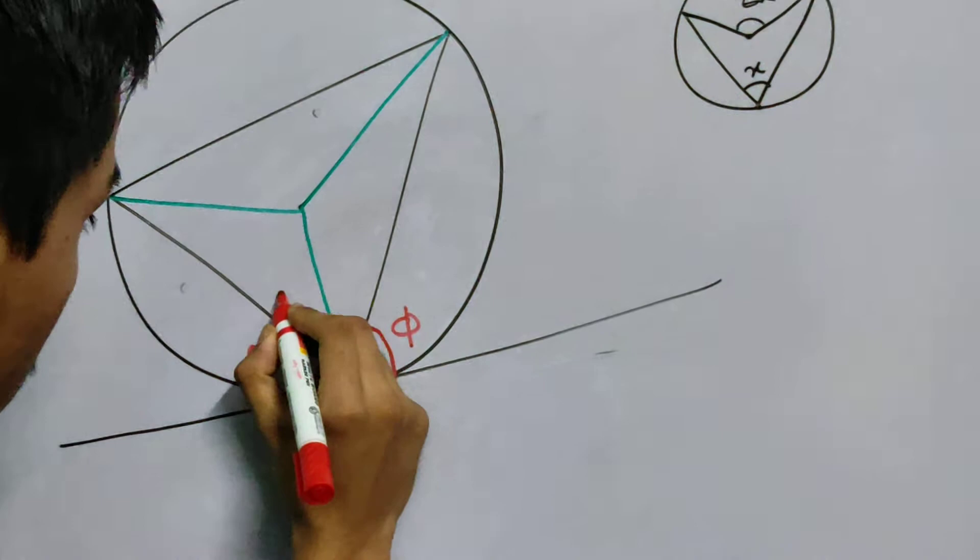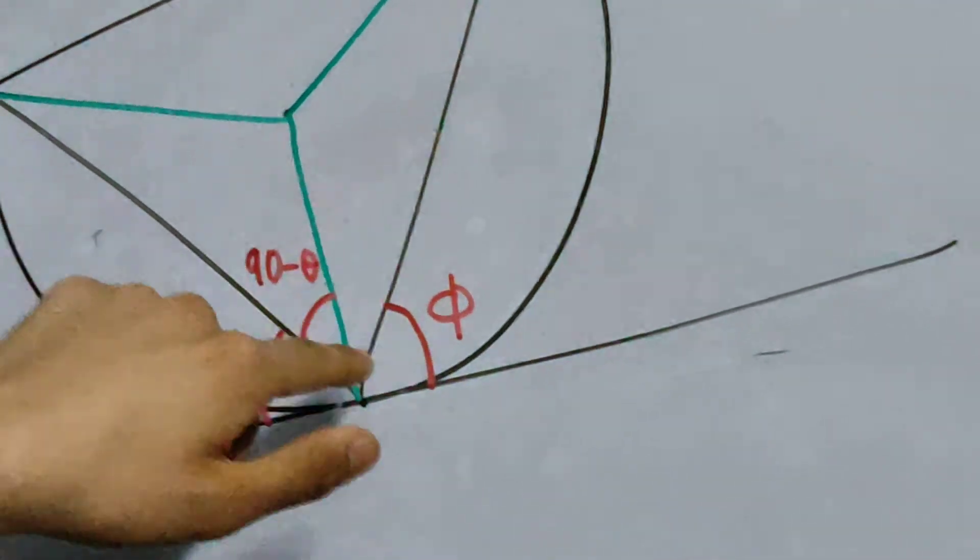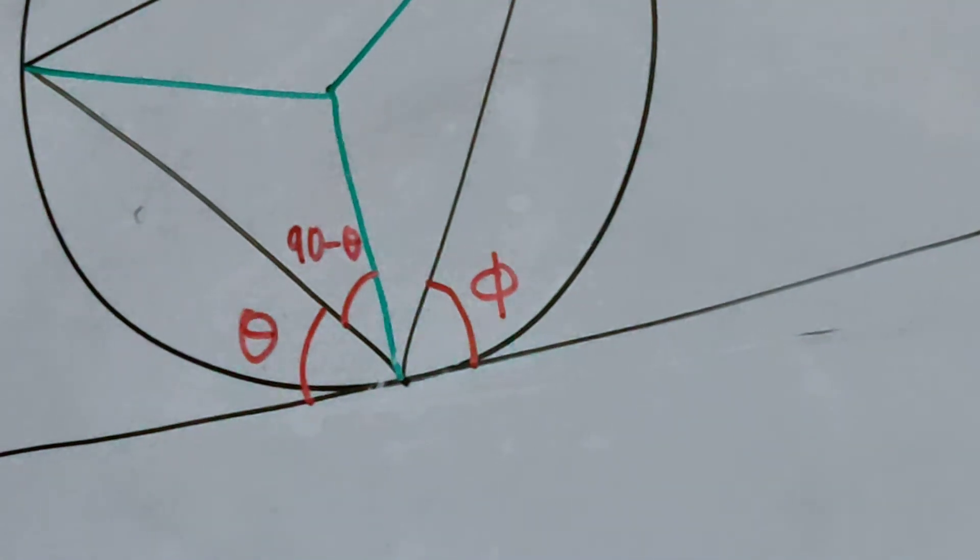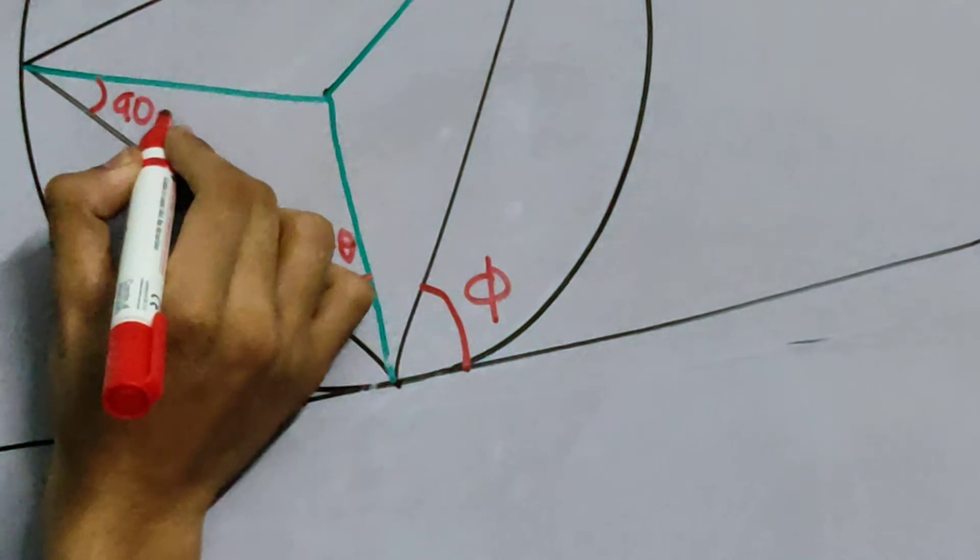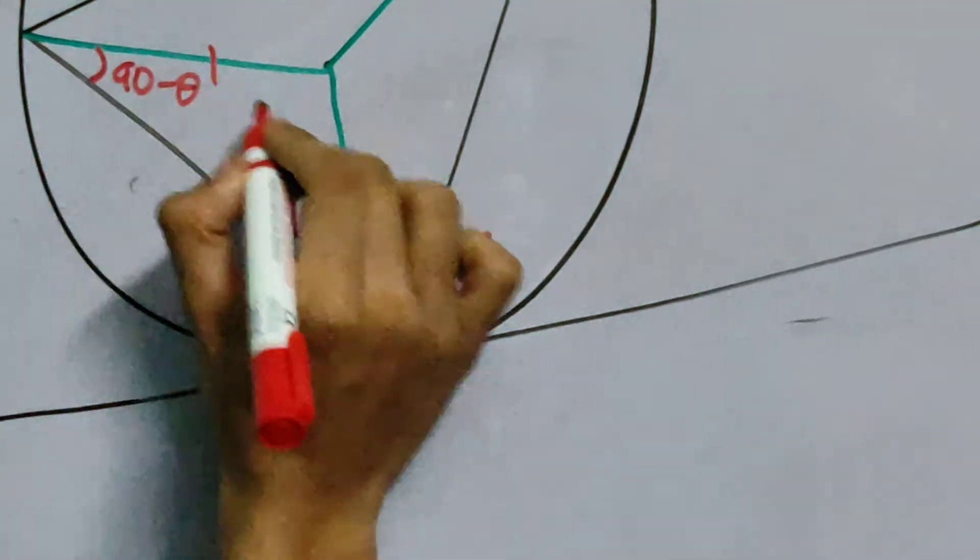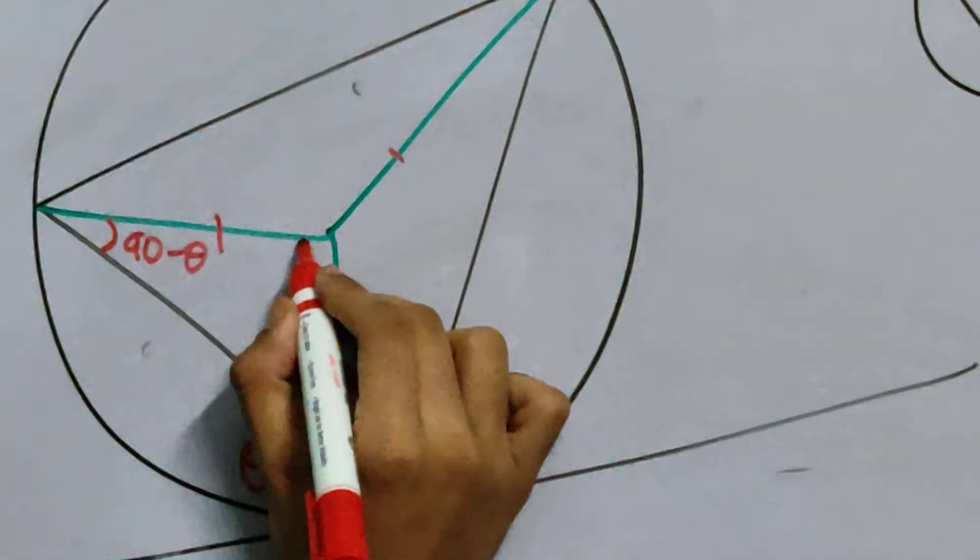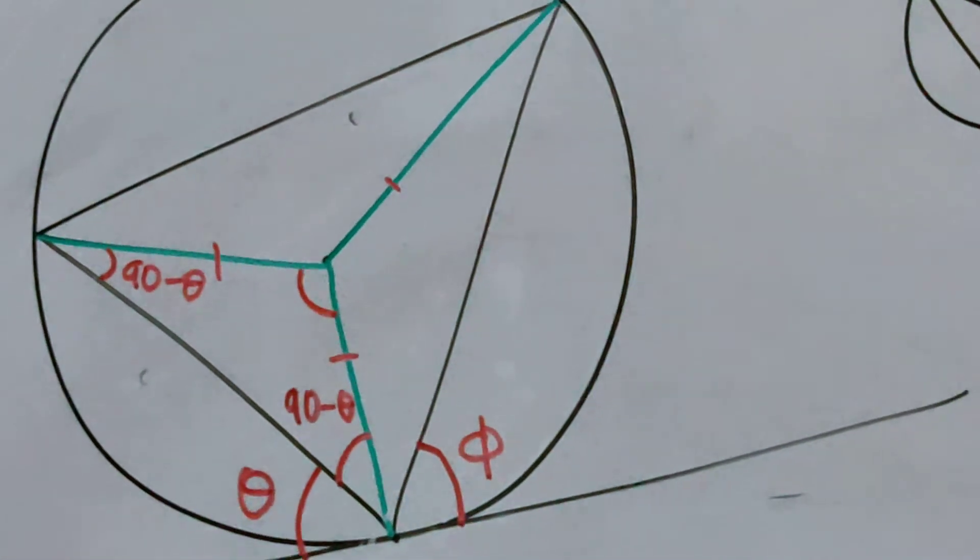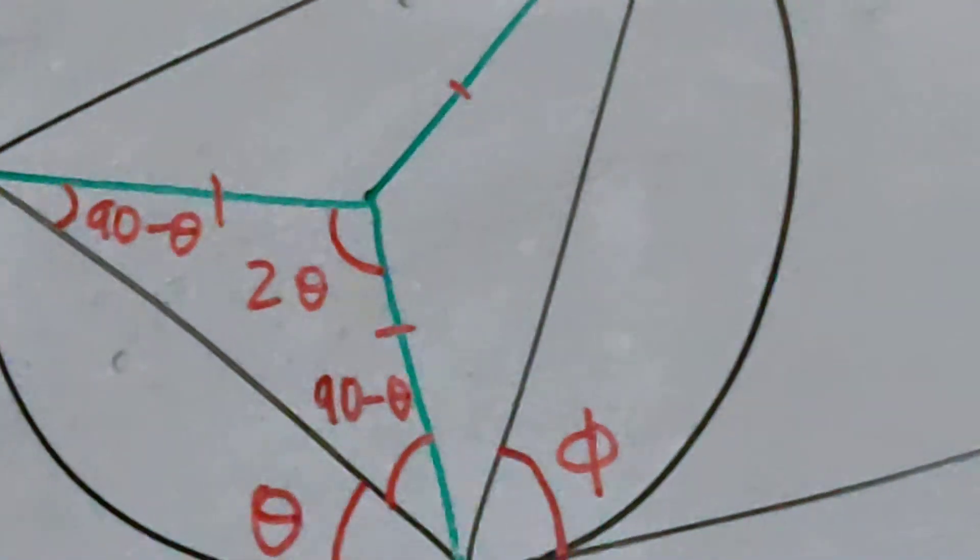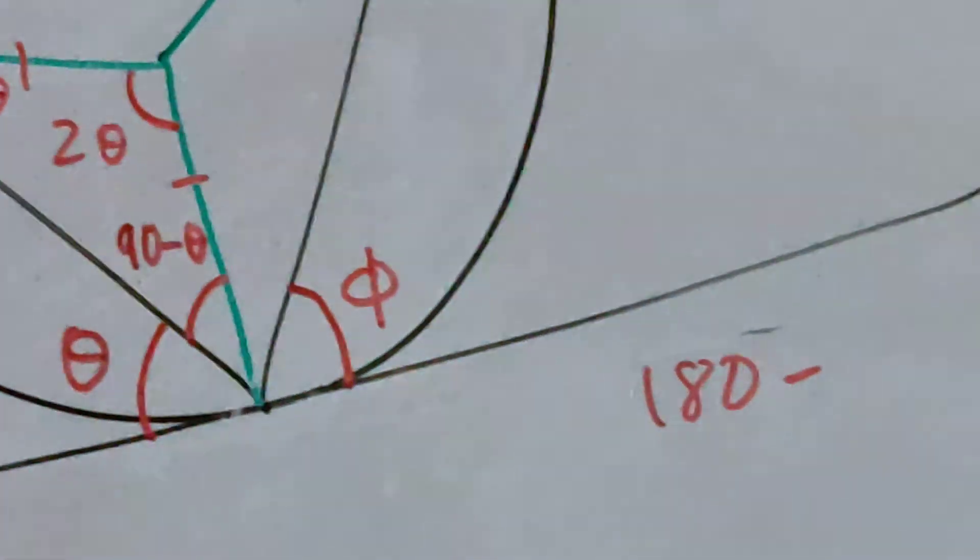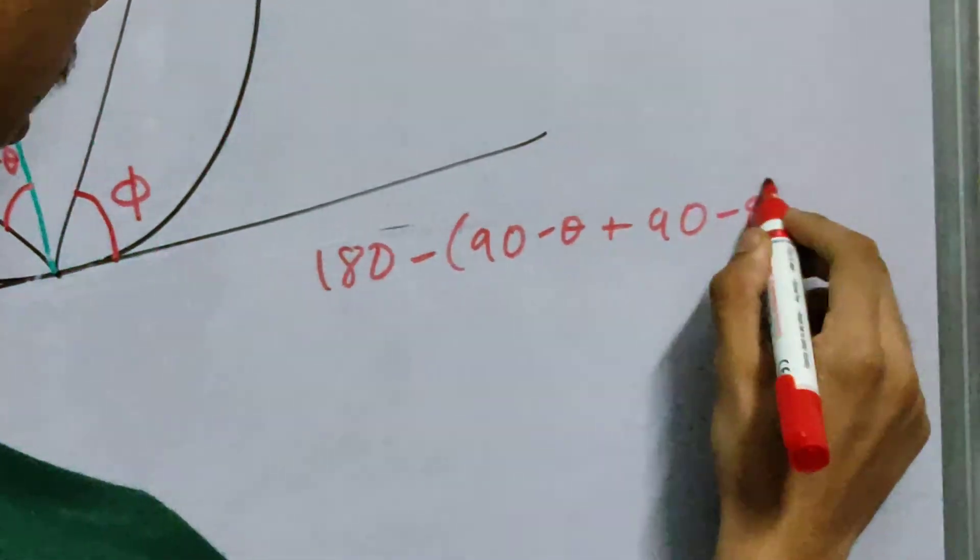And now we do the same thing which we did earlier. This angle will be 90 minus theta. Remember that we subtracted 60 degrees from 90 degrees. Similarly, this angle will also be 90 minus theta, because all of them are equivalent. This is an isosceles triangle. Now this angle will be 2 theta. You can use the angle sum property. 180 minus 90 minus theta plus 90 minus theta, so we get 2 theta.